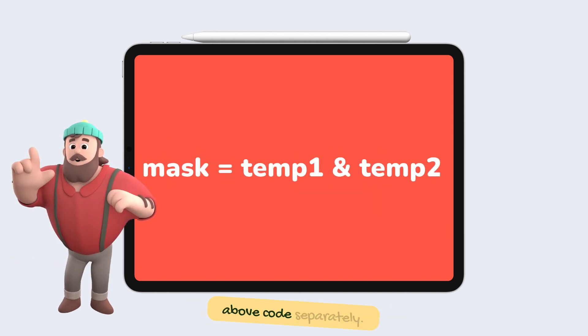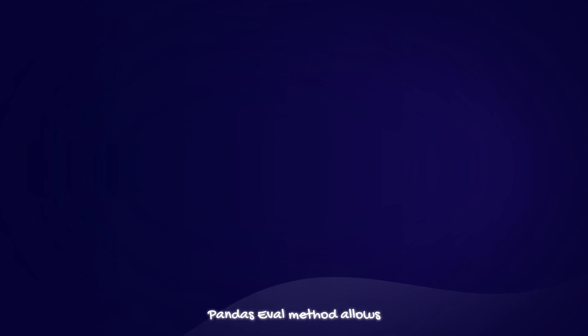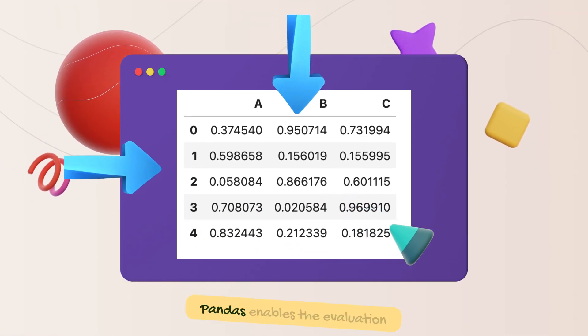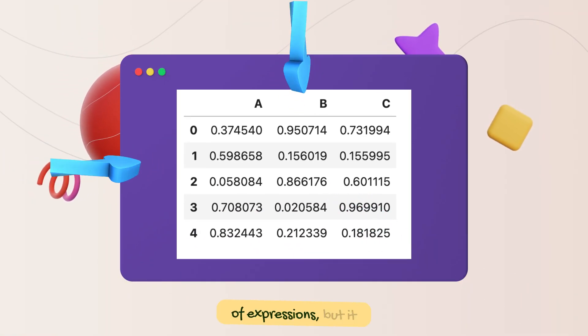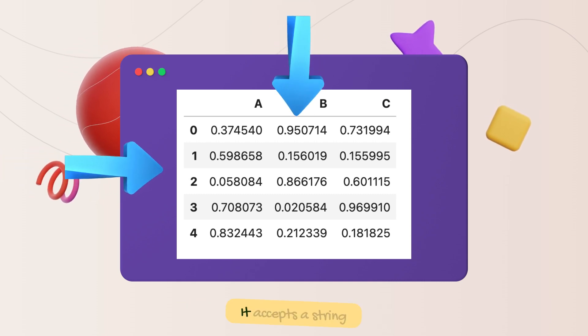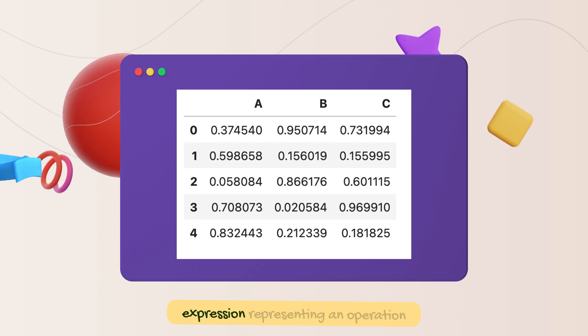Even though this may look efficient, NumPy evaluates each sub-expression separately. Pandas eval method allows you to compute compound expressions more efficiently. The same mask is created by writing an expression in a string, which creates a mask with low memory usage.